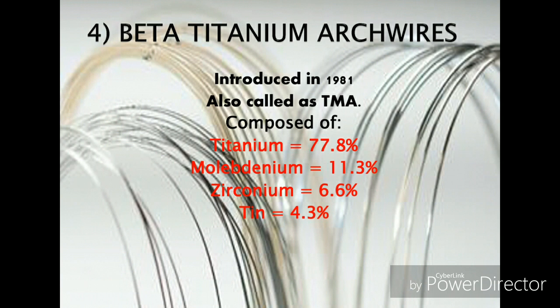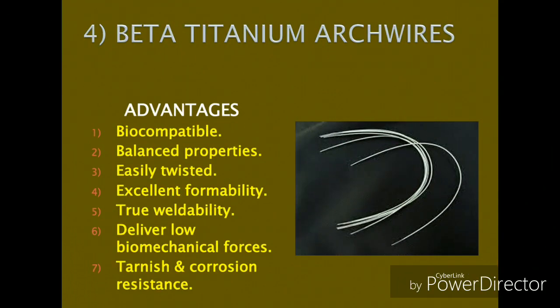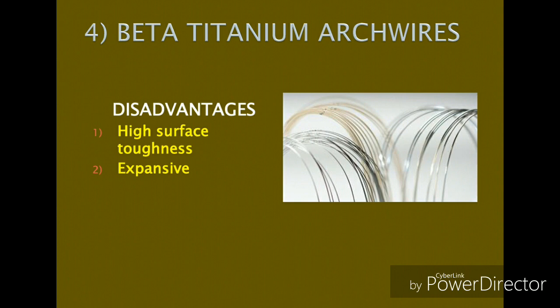The beta titanium arch wires, also called titanium molybdenum alloy (TMA) wires, were introduced in orthodontics in 1981. Their composition includes titanium and molybdenum as major elements, with zirconium and tin as minor additions. Besides being biocompatible, TMA possesses a balance of properties every clinician needs: high elasticity, low stiffness, and ease of joining. It can be easily twisted, has excellent formability, and possesses true weldability — meaning satisfactory joints can be made by welding. These wires deliver low biomechanical forces compared to stainless steel and cobalt chromium arch wires, and have excellent tarnish and corrosion resistance.